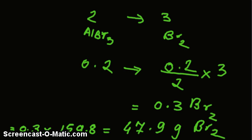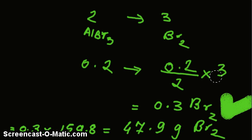This is the answer — the quantity of bromine which was consumed to give the 66.9% yield.